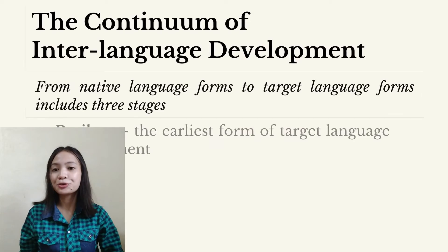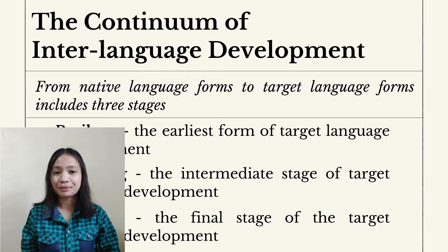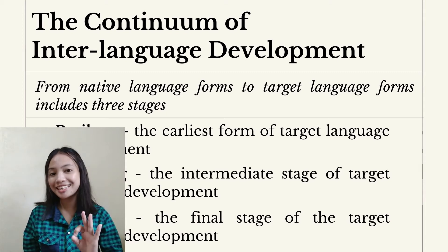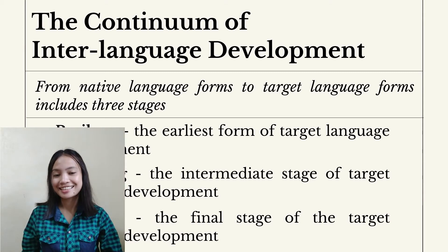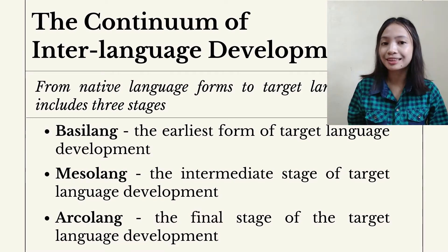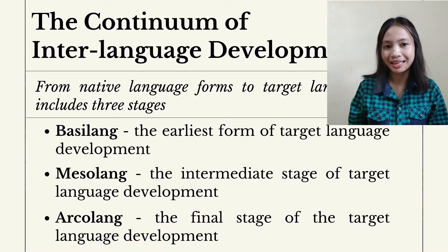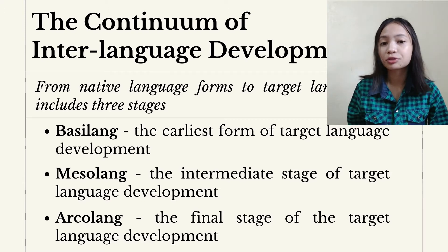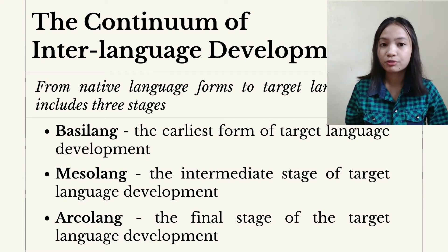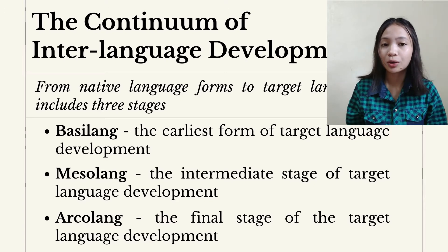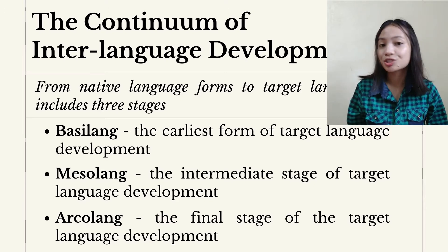The continuum of interlanguage development — from native language forms to target language forms — includes three stages. First, Basila: the earliest form of target language development. Second, Misola: the intermediate stage of target language development. And lastly, the final stage of the target language development.